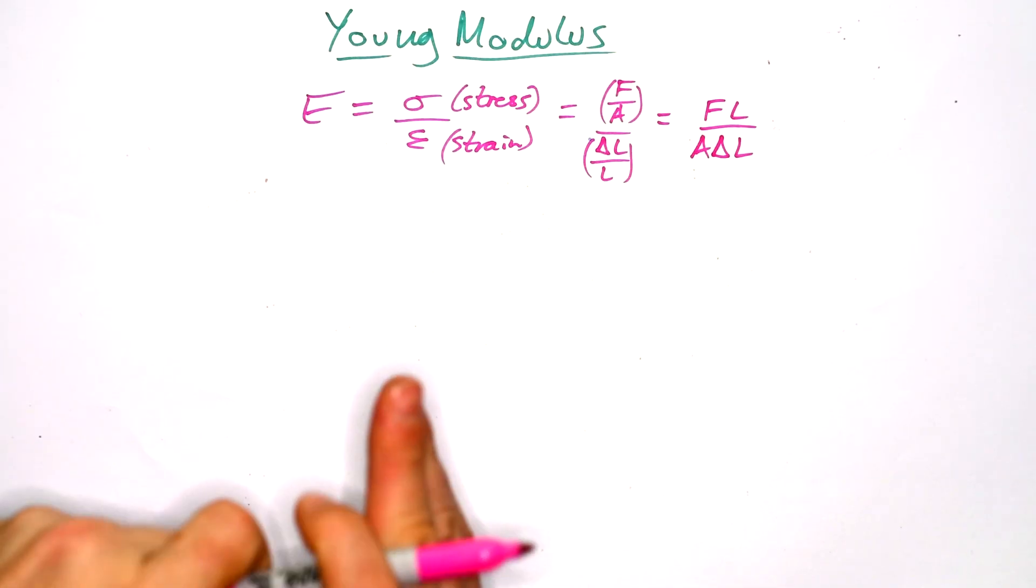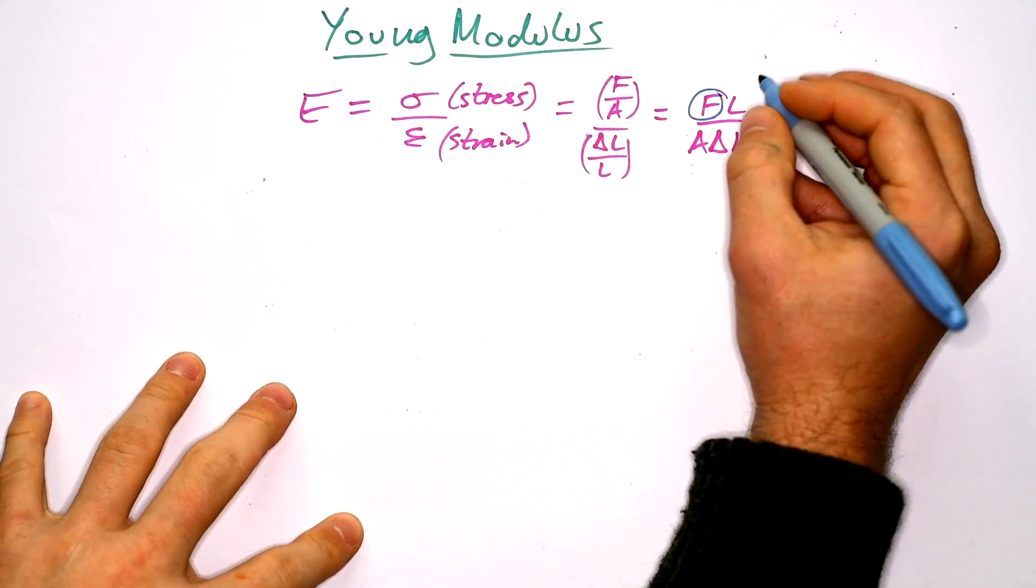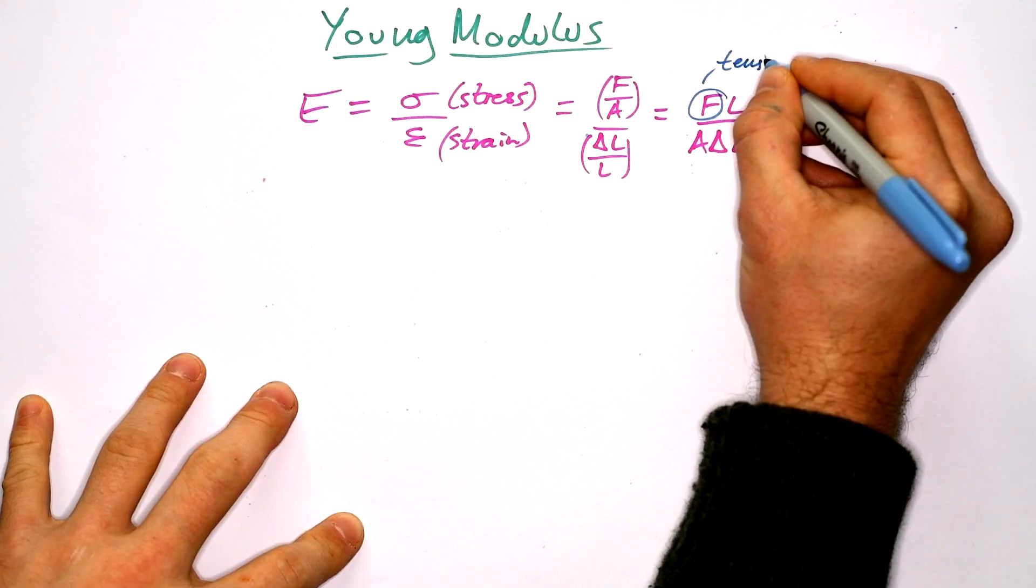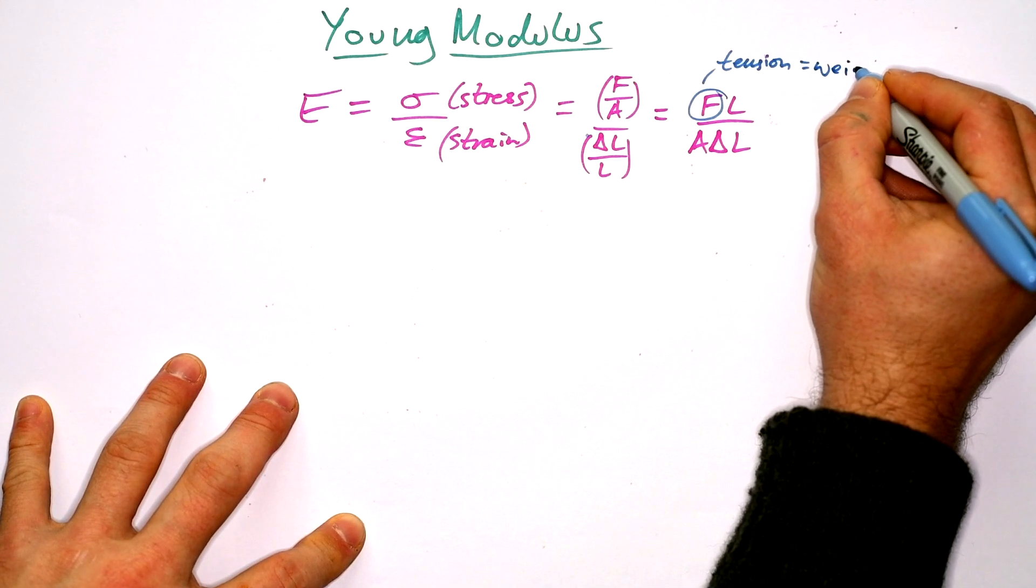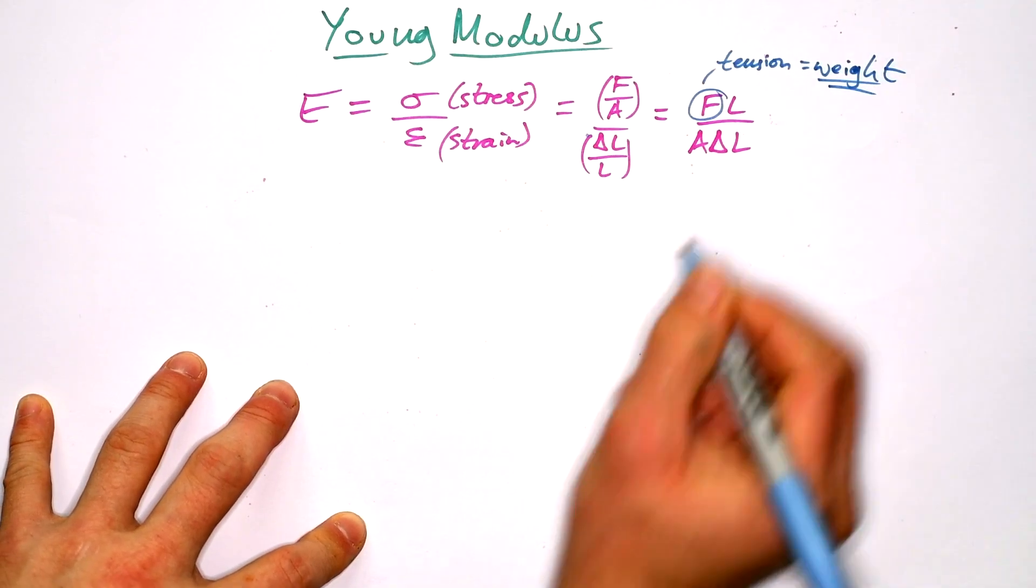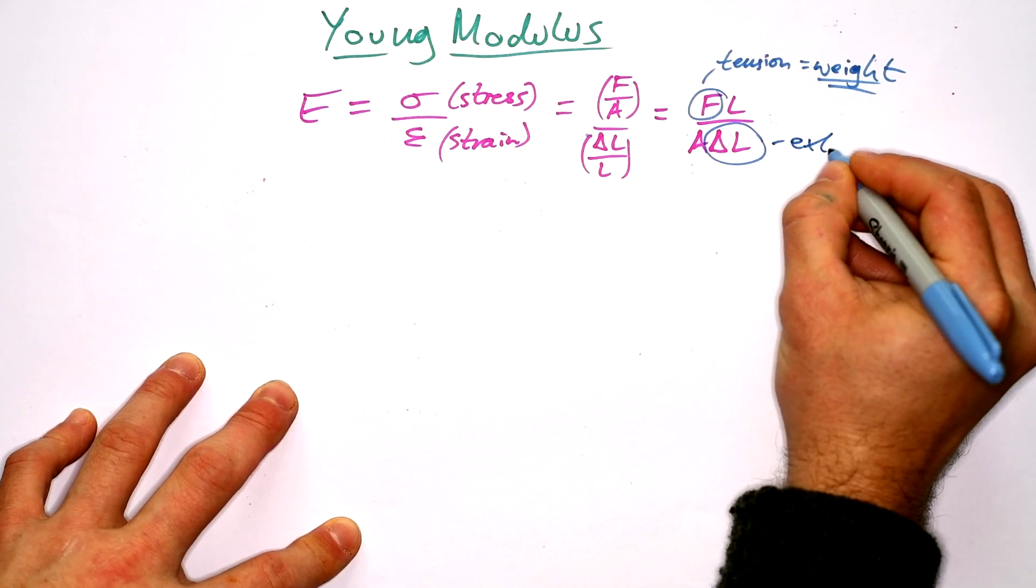So we want to find the Young's Modulus of a material. So we're going to be changing the force, and obviously that's going to be equal to tension in our string. And because we're obviously going to change that with masses hanging on the end, that's going to be equal to the weight that we hang off it. And we're going to be seeing how the extension changes.